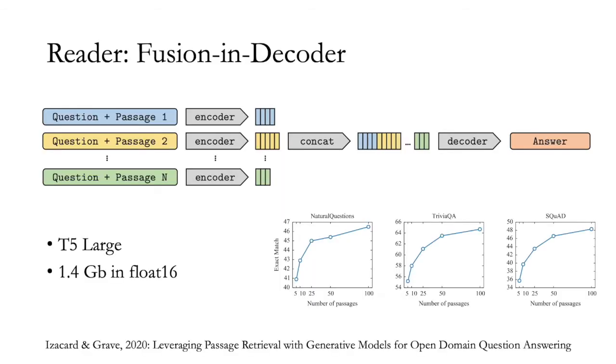For the reader, we use a Fusion in Decoder model. In this model, based on pre-trained sequence-to-sequence model, first the encoder is applied independently on each passage concatenated with the question. Then, all the representations are concatenated and the decoder is applied to generate an answer. Processing passages independently in the encoder allows to scale to large number of contexts. On the other hand, processing passages jointly in the decoder allows to better aggregate evidence from multiple passages. In our submission, the reader takes as input 100 retrieved passages of 100 words each.